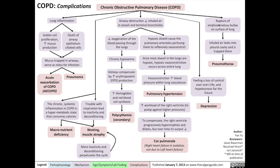Another complication of COPD is that, because of damaged lung tissue, the emphysematous bullae on the surface of the lung can often rupture, which results in inhaled air leaking into the pleural cavity and becoming trapped there, causing a pneumothorax.